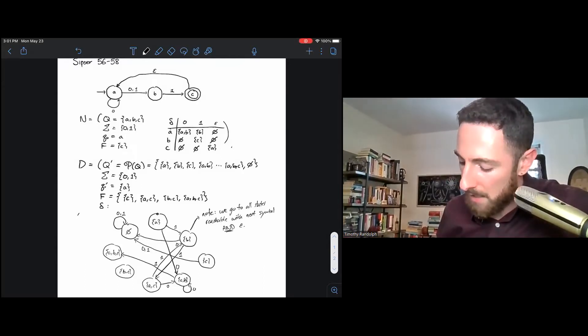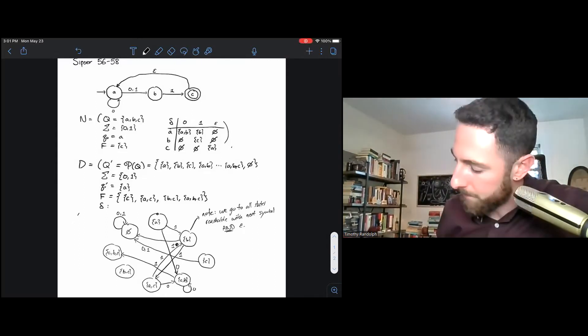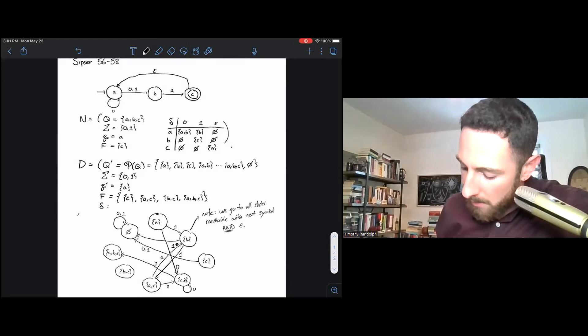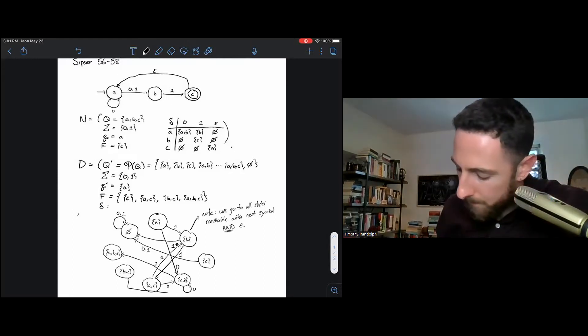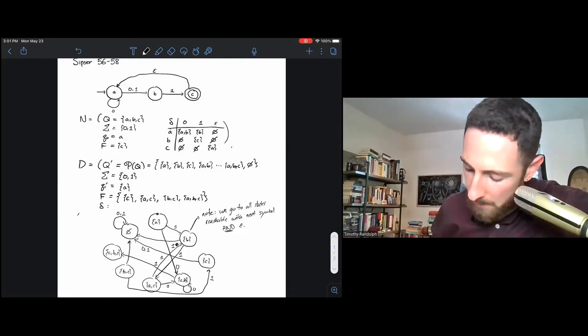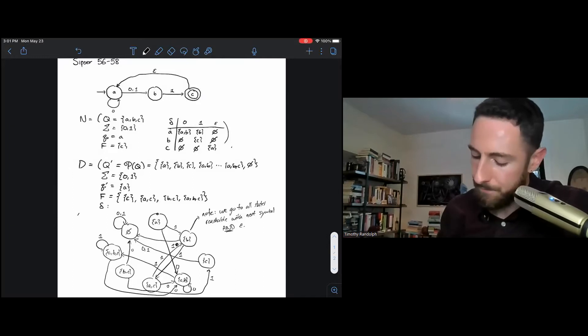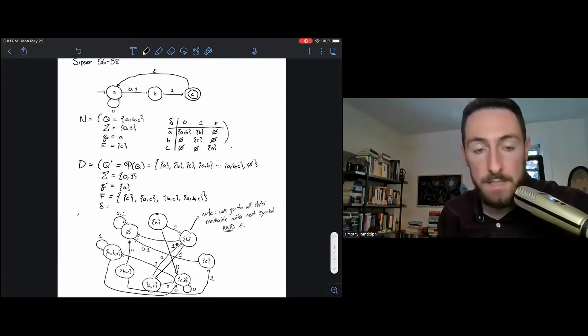So that's A, C on a zero to A, B, and on a one to B. B, C on a one, I'll wrap around here to C. And on a zero to the empty set. A, B, C on a one, we stay in A, B, C. And on a zero to the empty set. We're going to go to A, B.